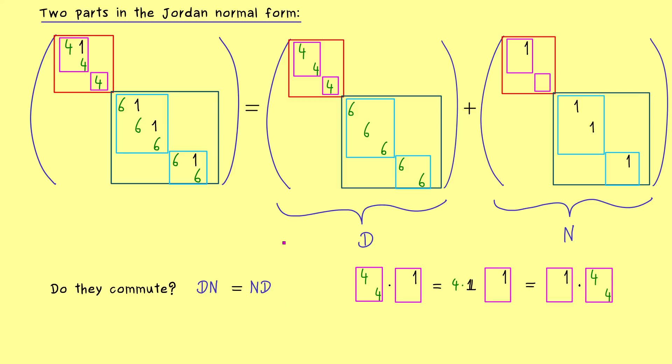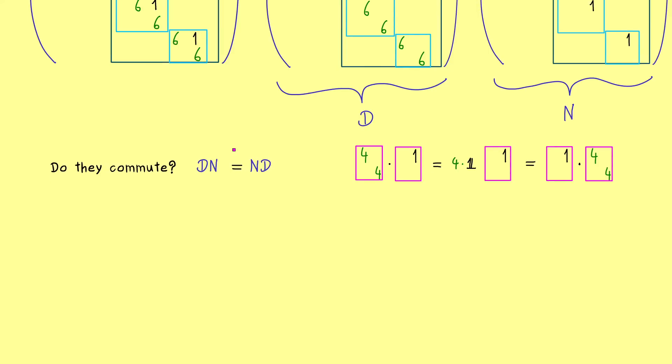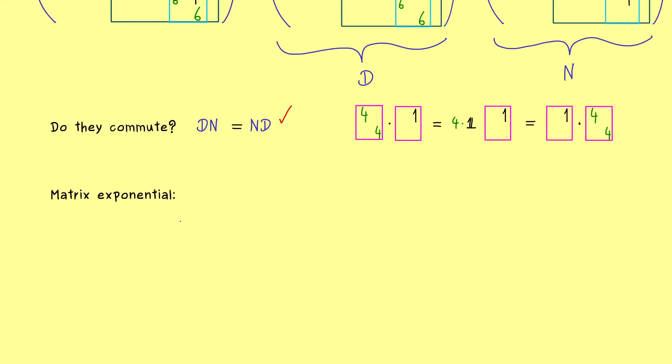And this is an important ingredient of our Jordan normal form, because we can use it for the so-called matrix exponential. This is a matrix construction, which works for every square matrix A. And the resulting new square matrix is what we call exp(A).